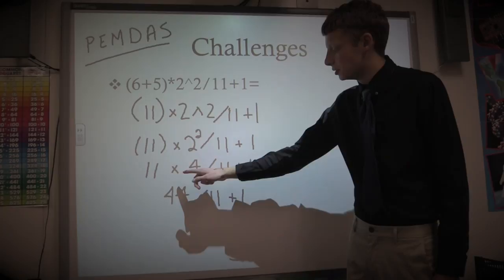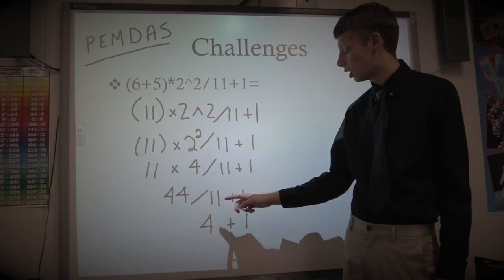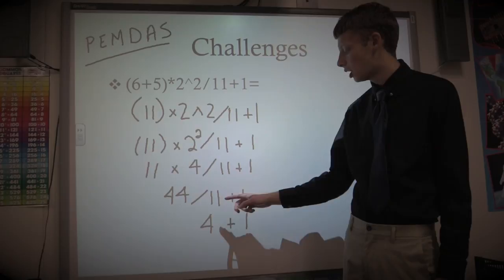Now, because the multiplication comes first in the equation, it goes before the division. And you end up with 44, divided by 11, plus 1. That gives you 4 plus 1, so the answer is 5.